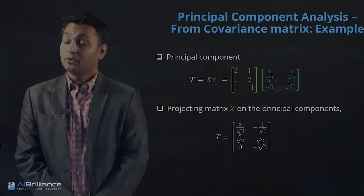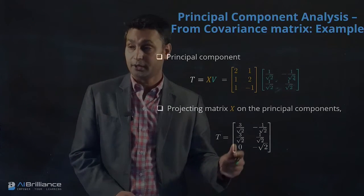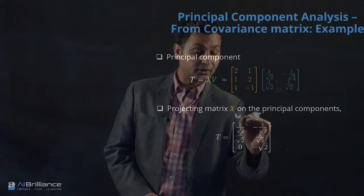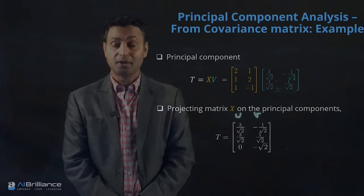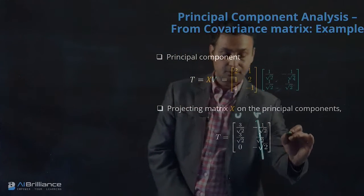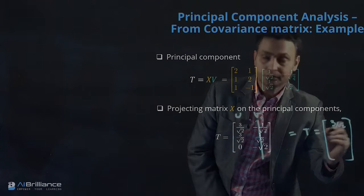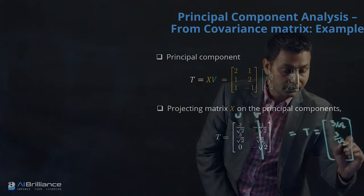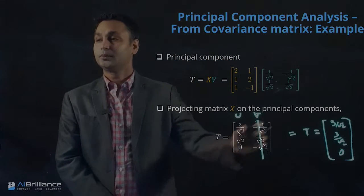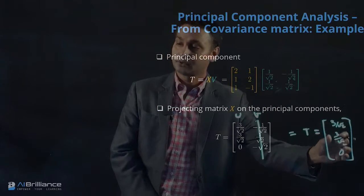But are we interested in just this? No — we are also interested in further reducing dimensionality. In the transformed space, each data point has two coordinates: a U coordinate and a V coordinate. If the second coordinate is not that important, we can throw it away. We simplify T to keep only the U coordinates: 3/√2, 3/√2, and 0. Those are the transformed coordinates, representing dimensionality reduction from two dimensions to a single dimension.